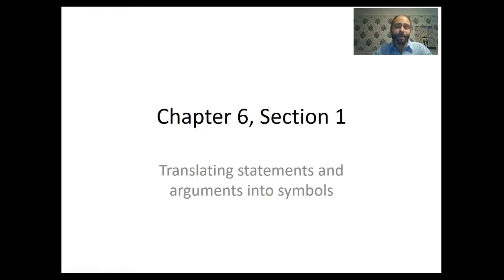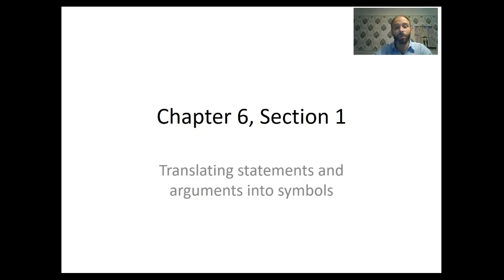Today we're going to be talking about Chapter 6, Section 1 of Hurley's Introduction to Logic, which covers translating statements and arguments into symbols. What we're going to be trying to do in this video is give you the tools you need to translate first simple and progressively more complex statements into symbols, because eventually we're going to be using the symbolizations of these statements in equations to figure out truth value and validity and things like that. So we'll start simple.